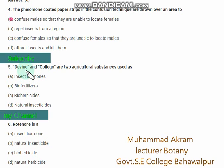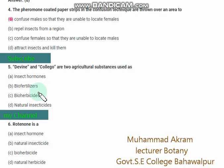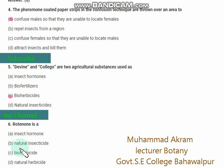The right option is option B — natural insecticide. Divin and Collago are two agricultural substances used as bio-herbicides. The right option is option B — natural insecticide.